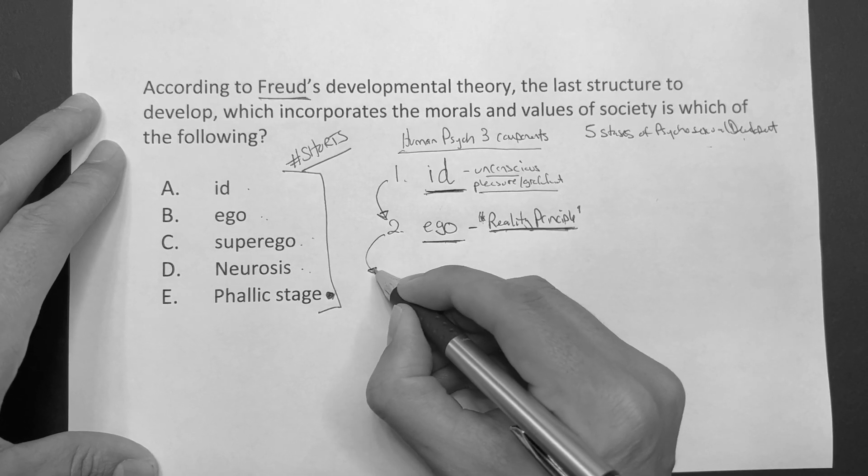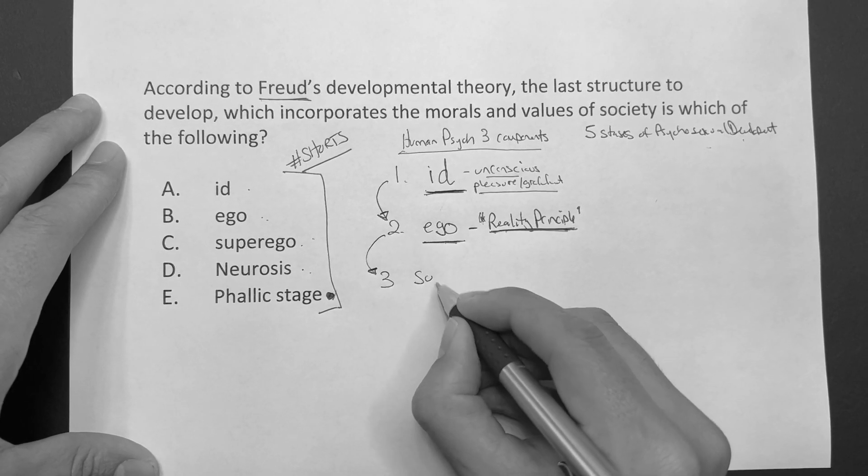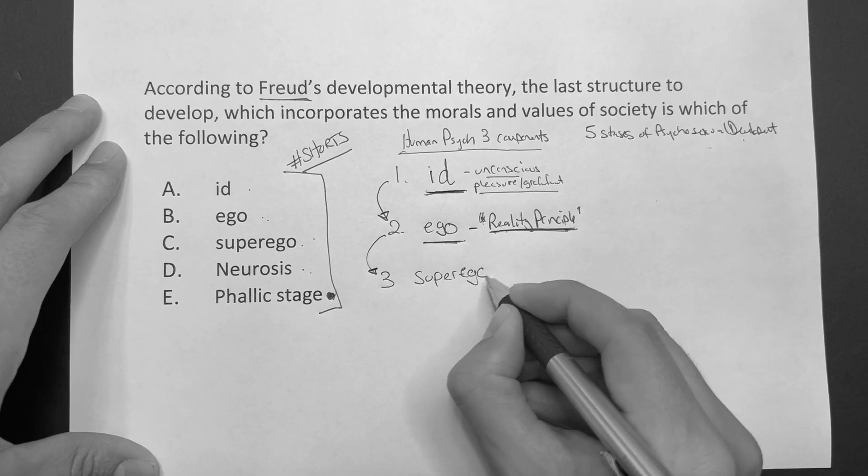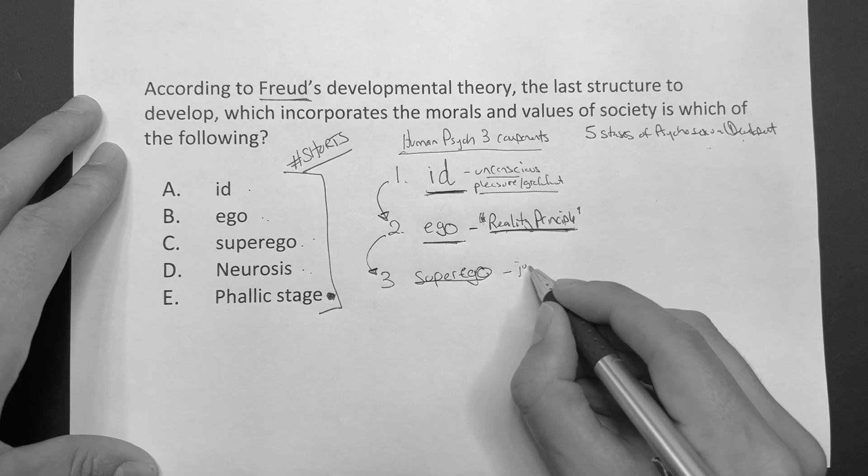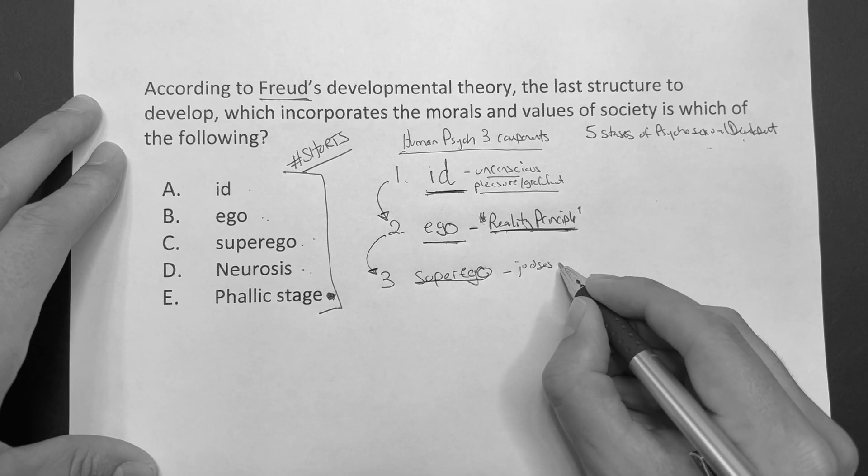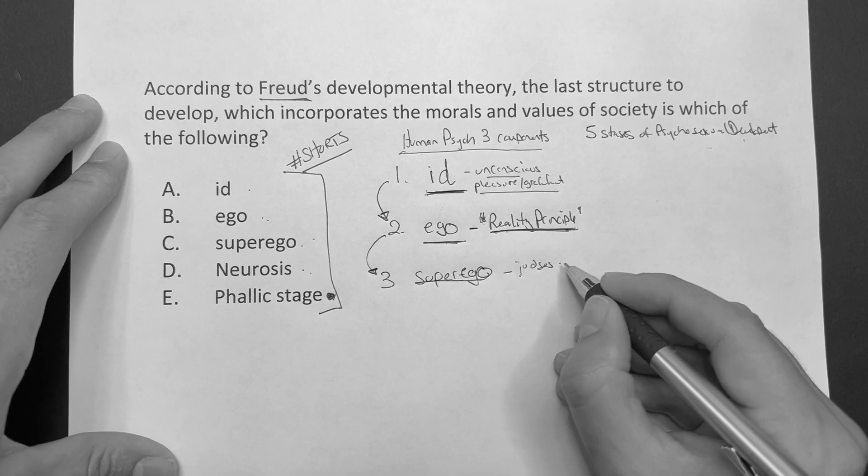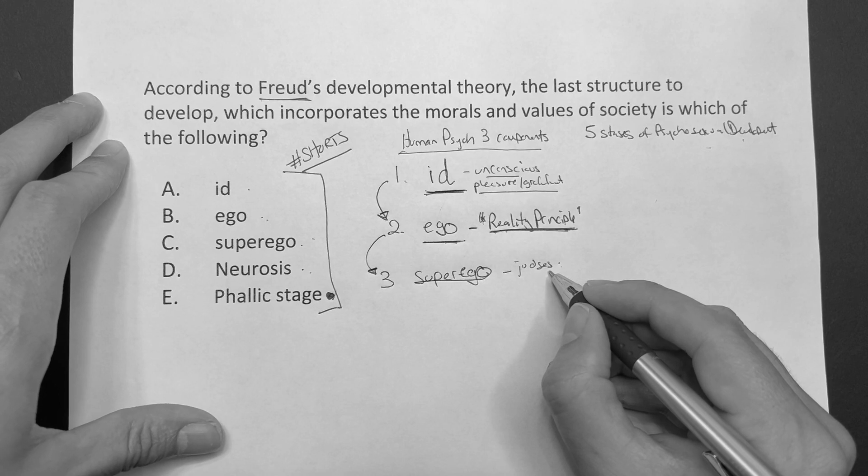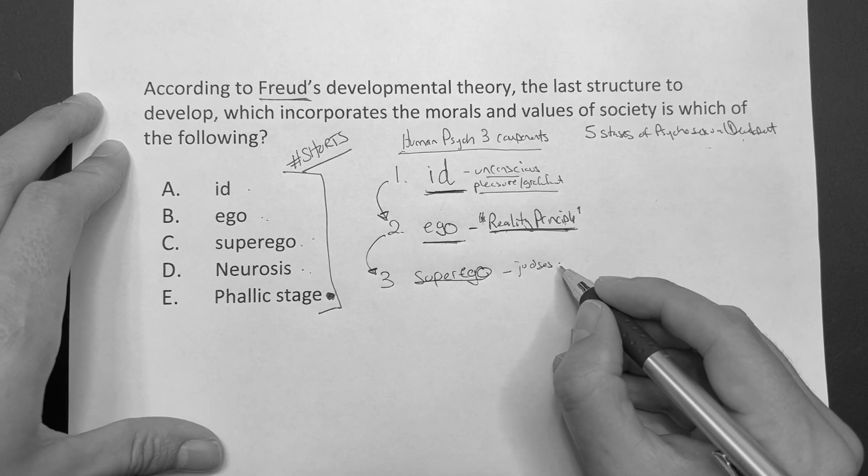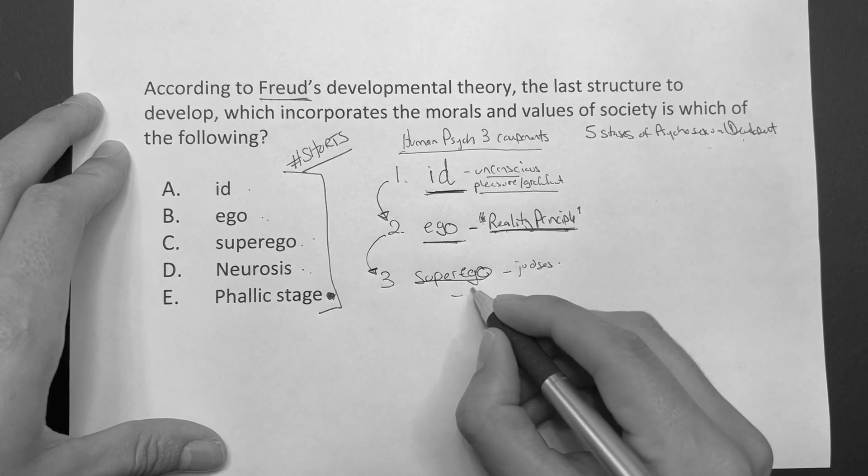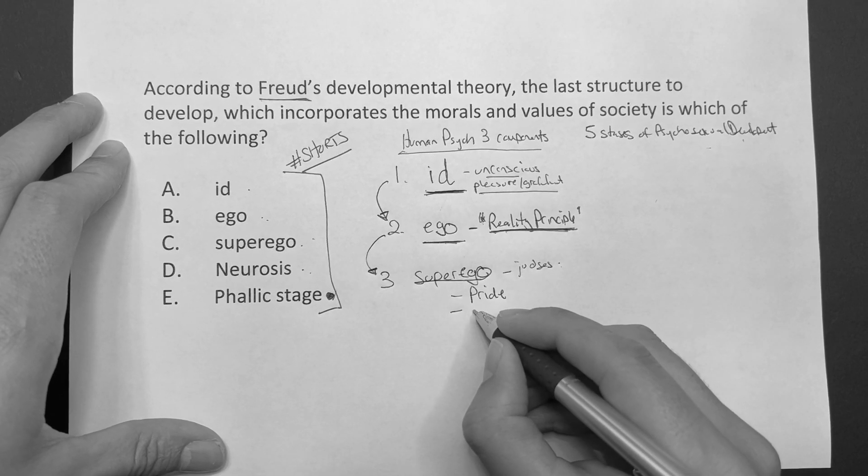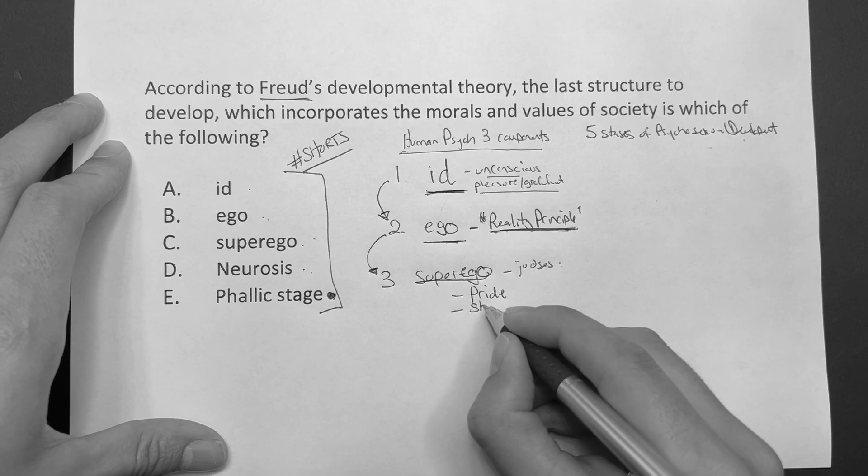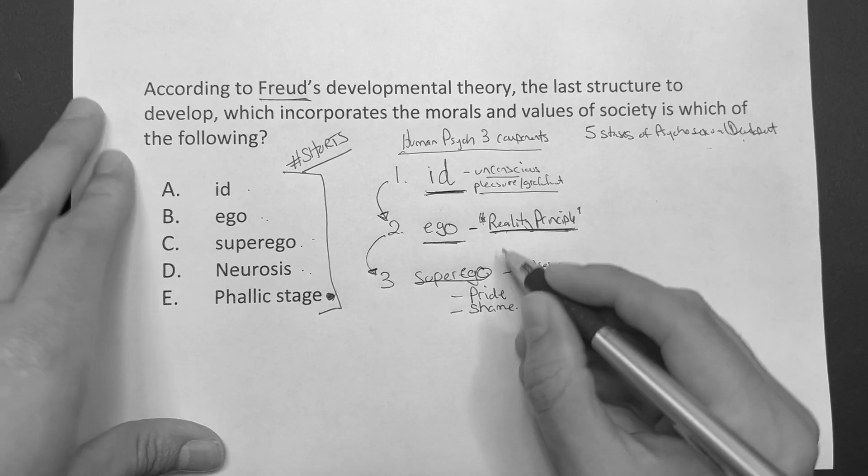So from this we will develop the superego. Now the superego that we have, this basically judges us. It judges what we should do morally. What we should do morally rewards us, and if we do the right thing, our superego says we have pride in what we do. If we feel like we did the wrong thing, this is where we get shame.